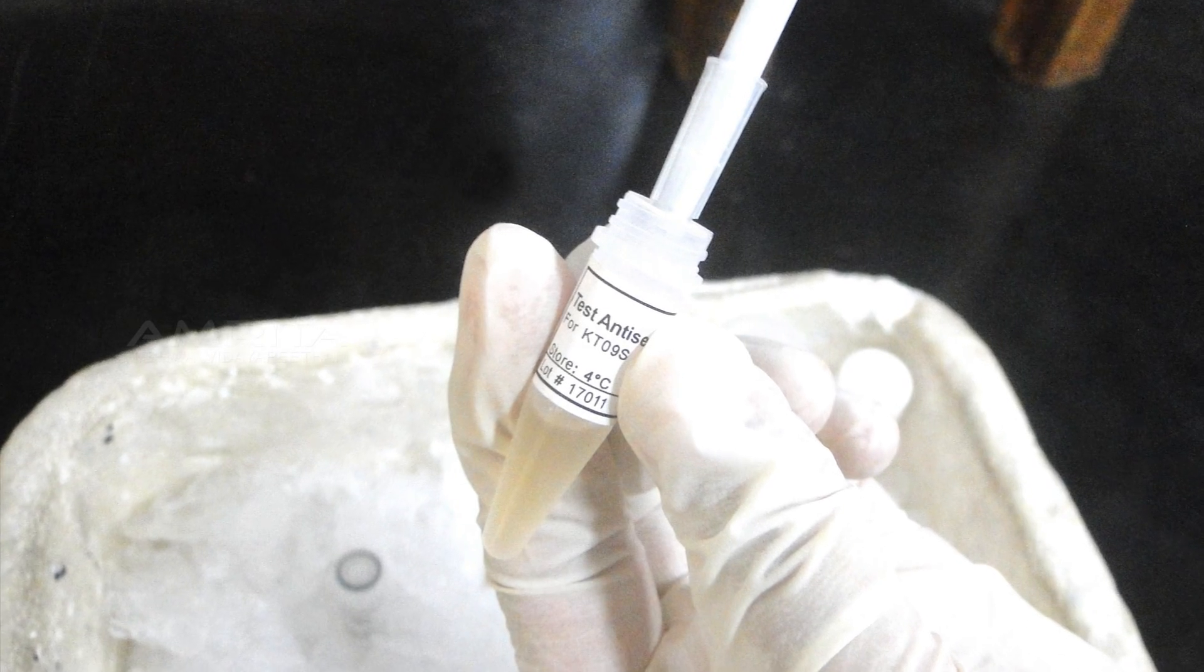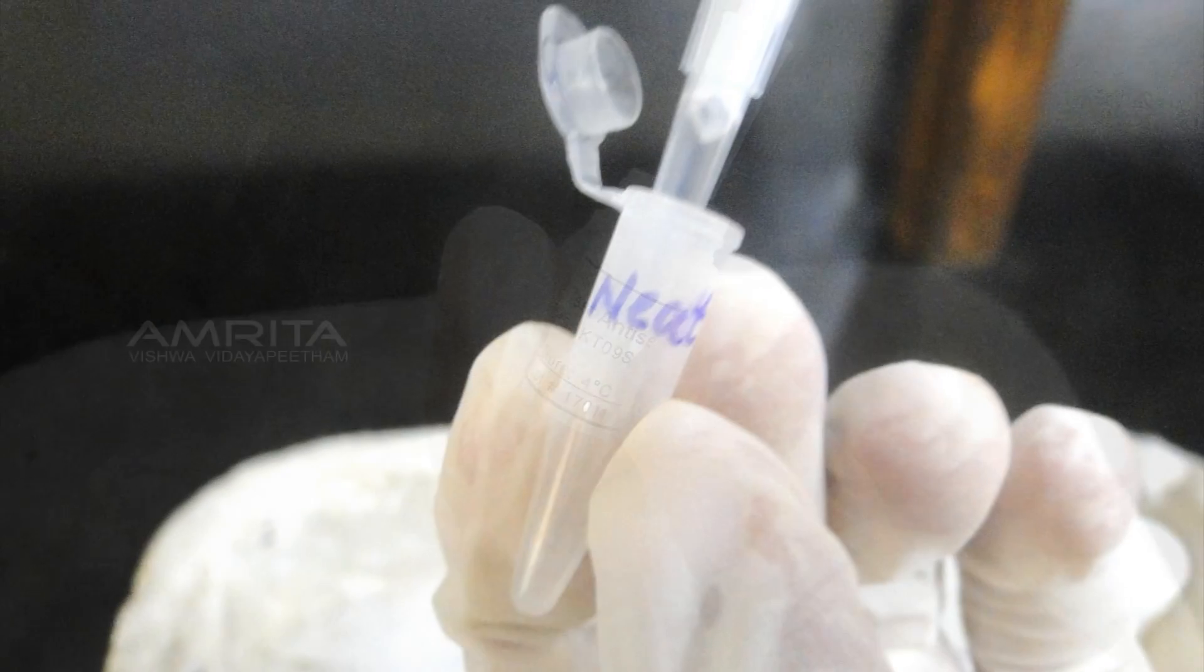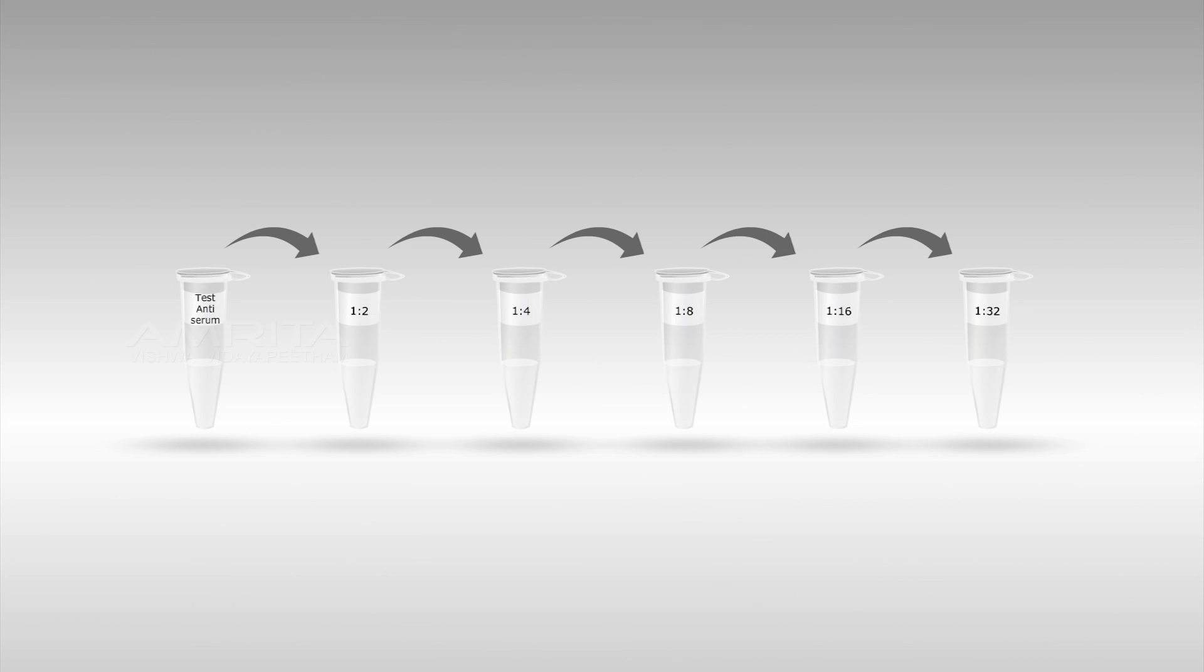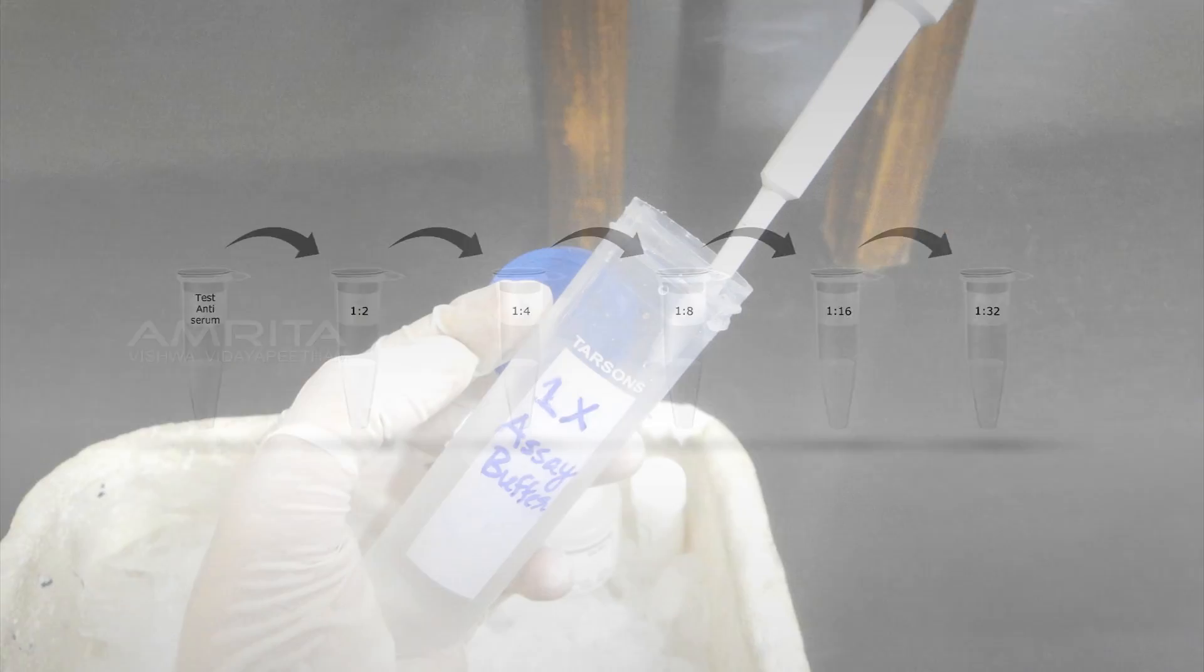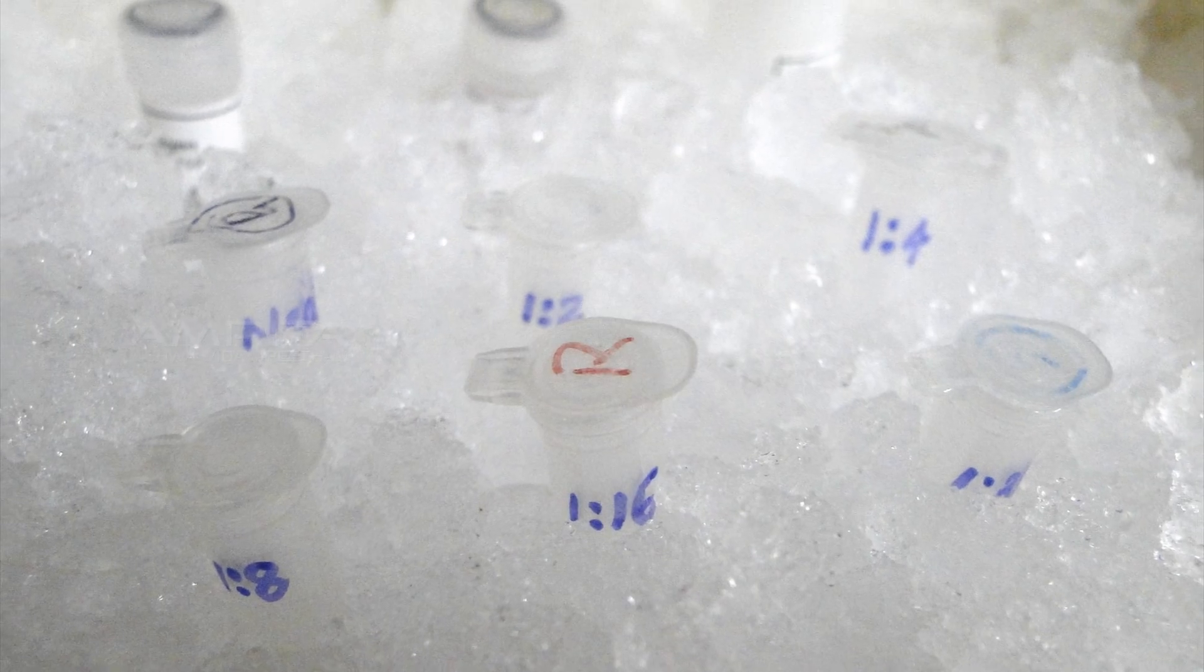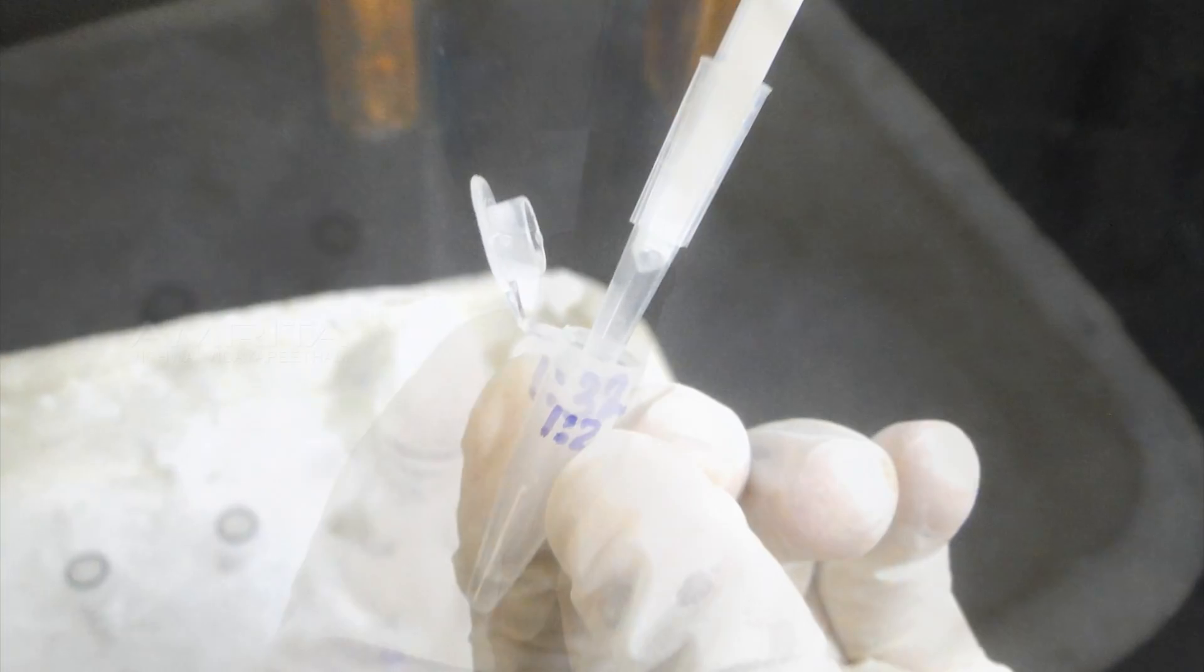Add 20 μL of test antiserum to the vial labeled NEAT. Serially dilute the test antiserum up to 1:32 dilution as follows: Take 20 μL of 1x assay buffer in each of the 5 vials labeled from 1:2 through 1:32.